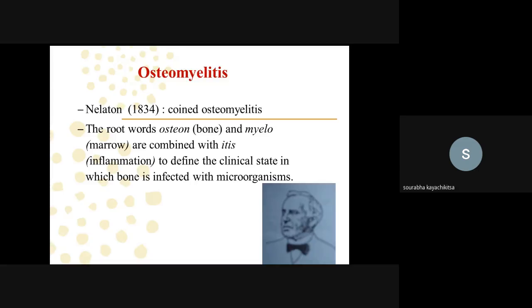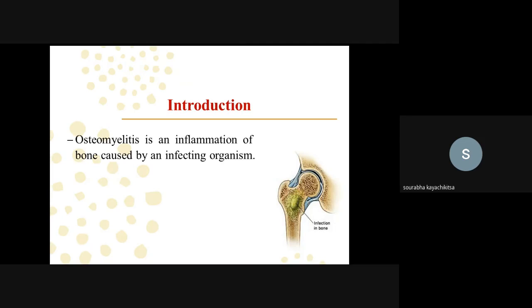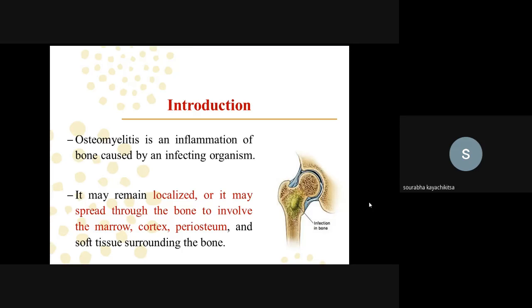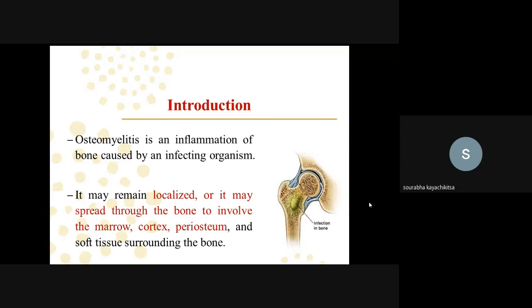The root word osteon means bone, myelo means marrow, and -itis means inflammation. So osteomyelitis is an inflammation caused by a microorganism infecting the bone. It is an inflammatory condition of the bone caused by an infecting organism. The infection may remain localized or spread through the bone to involve the marrow, cortex, or periosteum, and it is mostly localized in the soft tissue surrounding the bone.